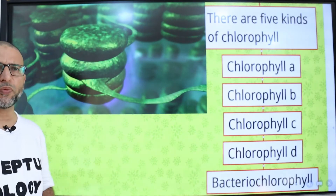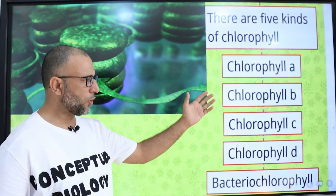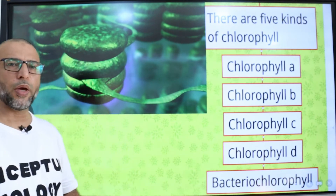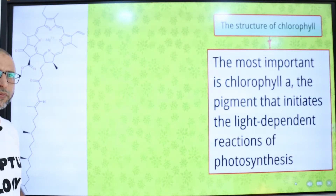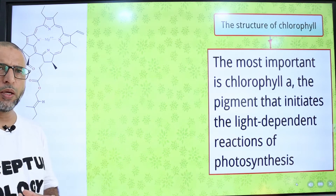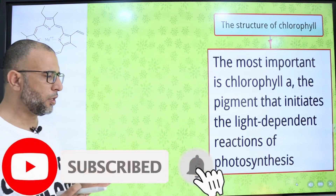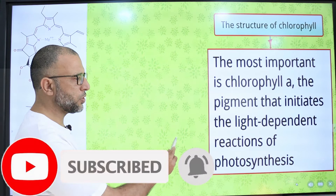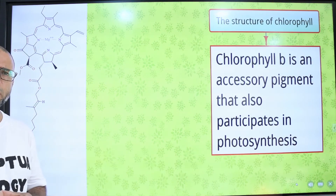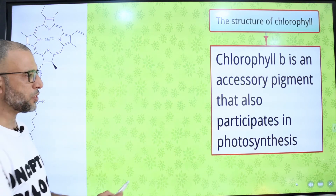There are five kinds of chlorophyll molecules: chlorophyll A, chlorophyll B, chlorophyll C, chlorophyll D, chlorophyll E, and bacteriochlorophyll. The most important is chlorophyll A, the pigment that initiates the light-dependent reactions of photosynthesis. Chlorophyll B is an accessory pigment that also participates in photosynthesis.